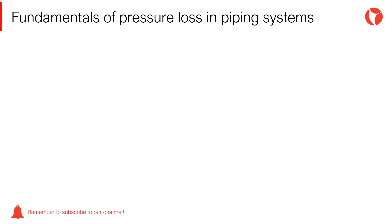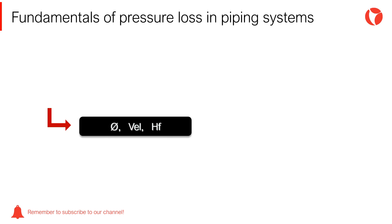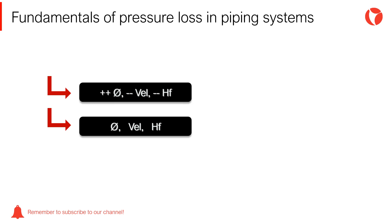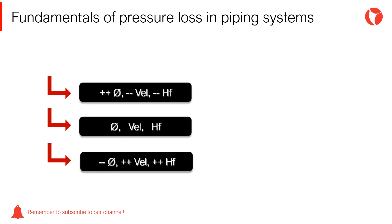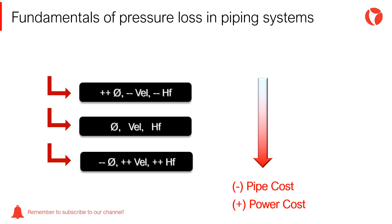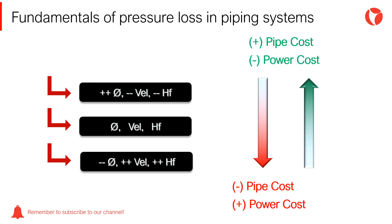For a given diameter, a fixed velocity and pressure loss can be found. If the pressure loss of the system needs to be minimized, the velocity has to decrease, and therefore the diameter of the pipes will increase. If the capital investment of the installation needs to be reduced, the pipe diameter can be reduced, increasing the velocity of the system and thus the pressure loss. Summing up: reducing the diameter means less initial investment and more pressure loss — in other words, more installed power. On the contrary, reducing the pressure loss will require slower velocities and in turn larger diameters.